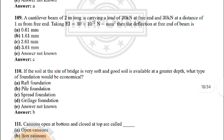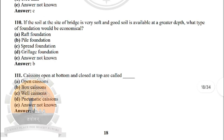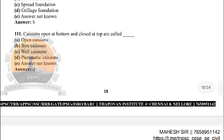Next: if the soil at the site of a bridge is very soft and good soil is available at greater depth, what type of foundation would be economical? — the correct answer is option B: pile foundation. Next: caissons open at the bottom and closed at the top are called — pneumatic caissons.